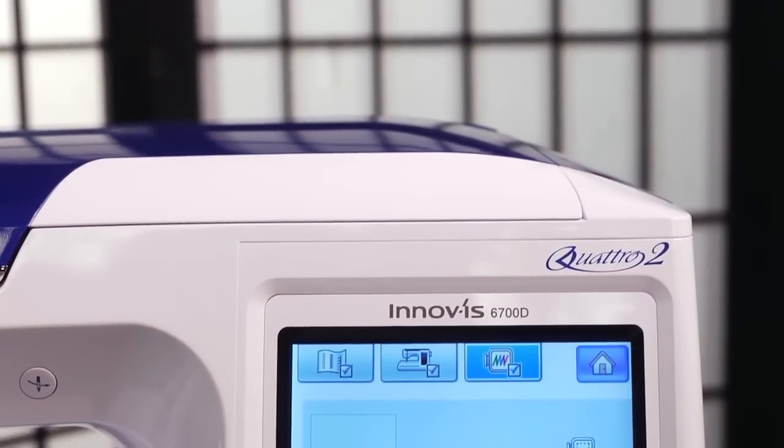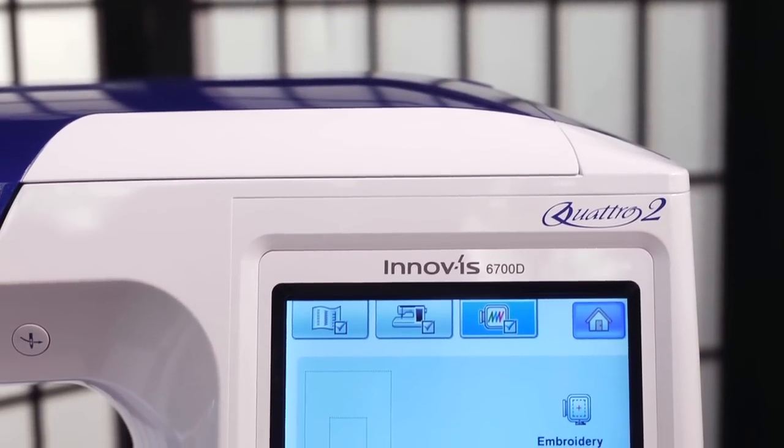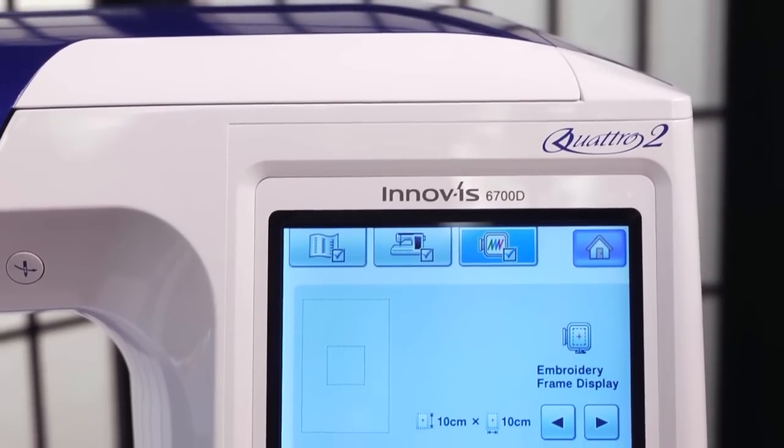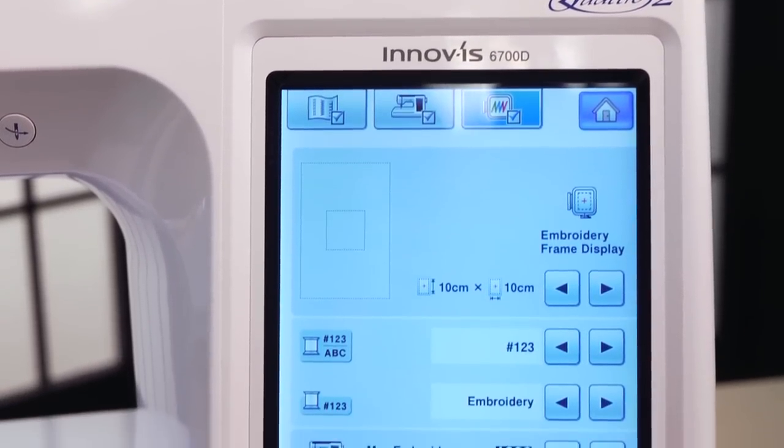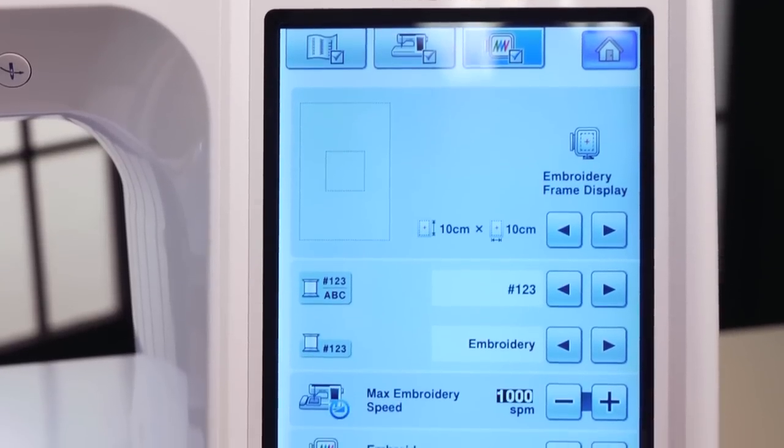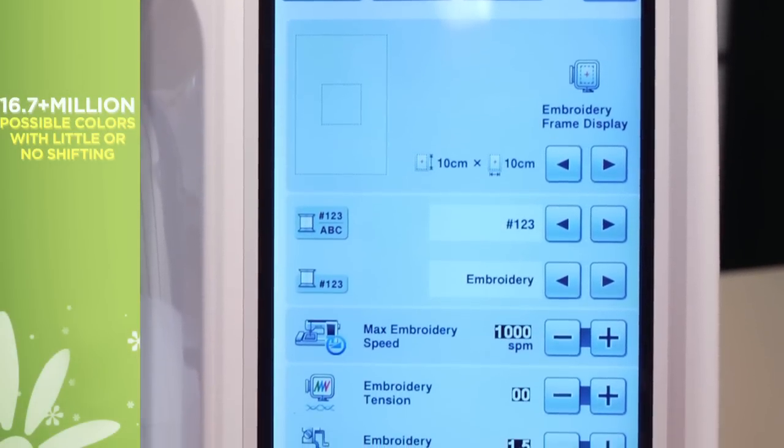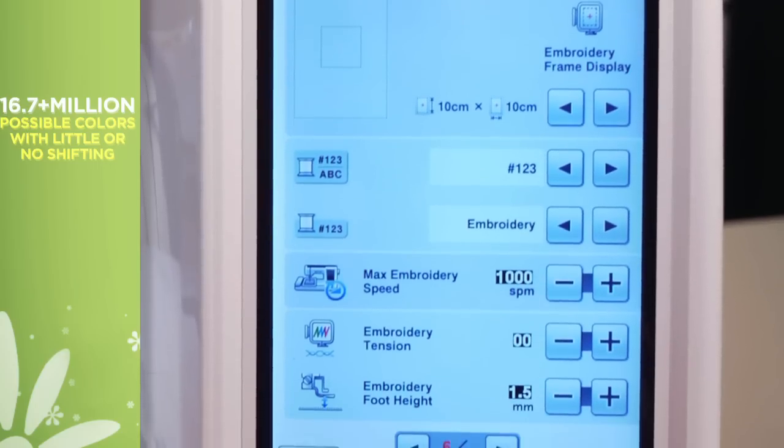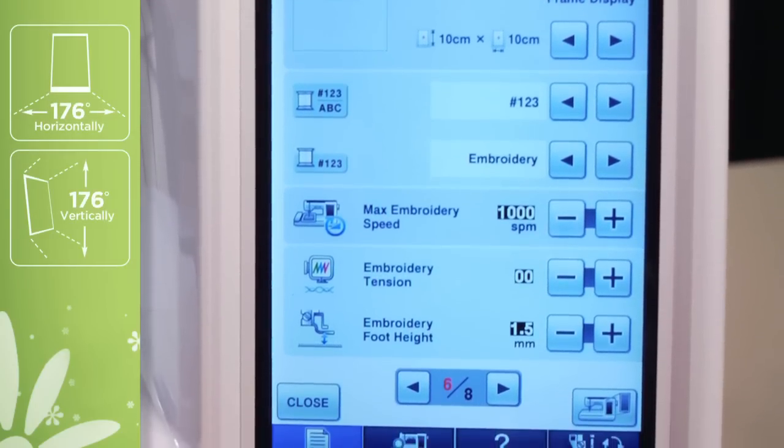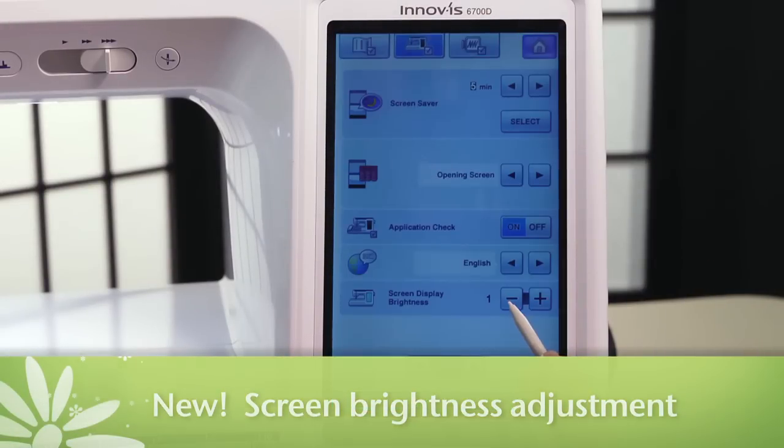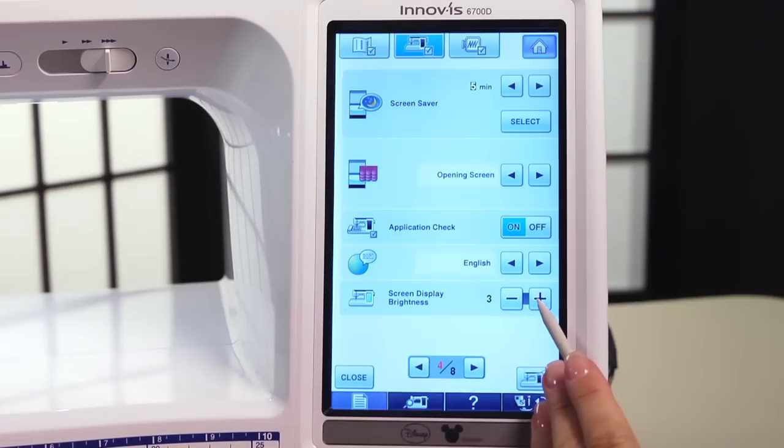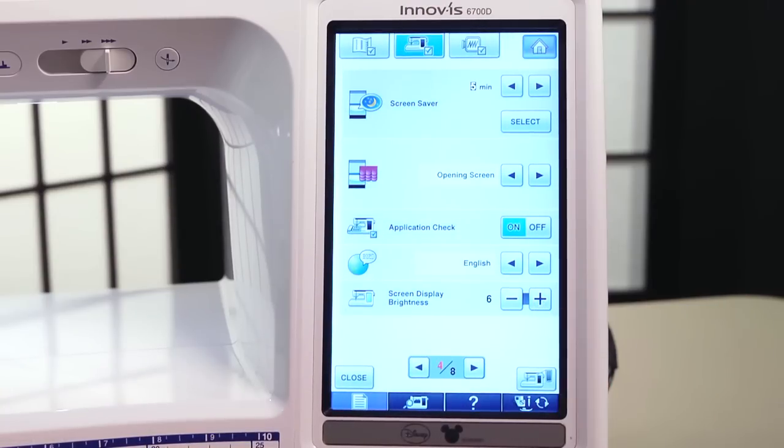To start, Quattro II has a new advanced SuperView HD LCD display, the most advanced ever put in a sewing and embroidery machine. The LCD screen from Sharp Corporation displays more than 16.7 million colors with little to no color shifting and offers an enhanced viewing angle and a new brightness adjustment so you can see your designs from virtually anywhere in any lighting. The crisp, sharp clarity allows you to see your designs on the LCD display screen in a way you probably never imagined.